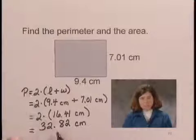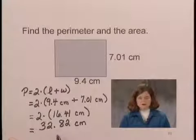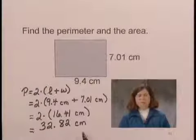This is P, or the perimeter, of the rectangle. And notice the units are centimeters.